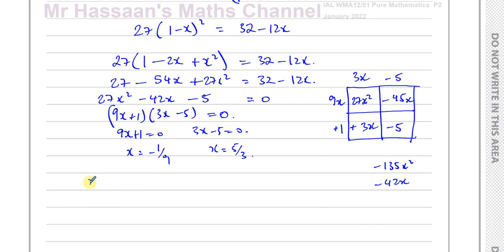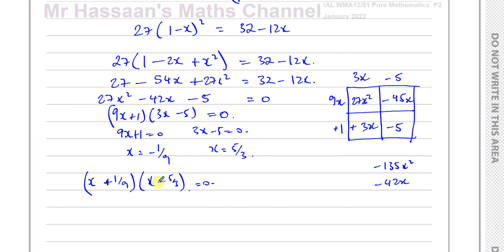Some students try to be clever and write x plus 1 over 9 in one bracket and x minus 5 over 3 in the other — but that will also lose marks, because the examiner knows what you did with your calculator. This is mentioned in the mark scheme of the P1 exam with a similar factorizing question: writing answers in that form will gain no marks. So you have to be careful about trying to reverse-engineer answers from a calculator.